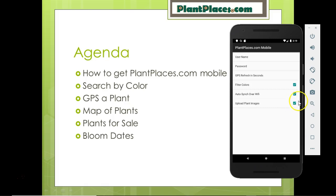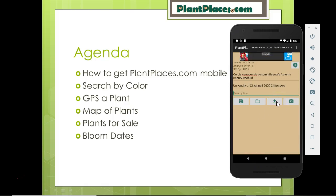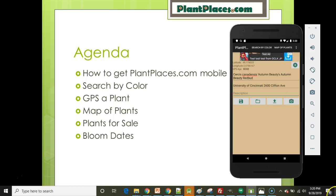For photos, you also need to have the Upload Plant Images box checked. If you leave that checked, it will upload any photos you take; if you don't want to upload photos, simply untick that box. Photos on a typical Android device are about 8 to 10 megabytes, and if you GPS around 100 plants at a botanical garden, that can be a fairly large amount of data, which is why it's optional. Fill out the username — it's a good idea because it lets you get a sustainability report. The other option is to press the upload button to upload your plants on demand to PlantPlaces.com.